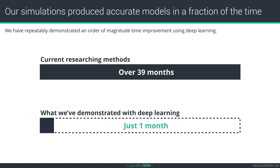To give you an idea of how much time computing optimal material design can actually save: in one instance, we had a researcher who had been working on a project for about 39 months. Using New Silico, we helped her optimize the ligand-to-nanoparticle ratio, and it took her just one month to achieve the objective she had been looking for with her material.